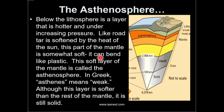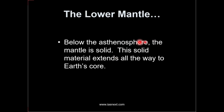Below the lithosphere there is a layer which is hotter and under increasing pressure — that part is known as the asthenosphere. All volcanic activities and earthquake activities take place in the lithosphere, and the lower part of the lithosphere leads into the asthenosphere. Asthenosphere means weak — a weak zone; in Greek 'asthen' means weak. Although this layer is softer than the rest of the mantle, it is in a solid state. Below the asthenosphere the material is solid and extends all the way to the earth's core.